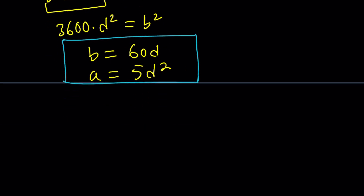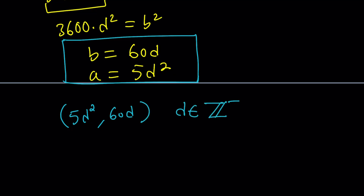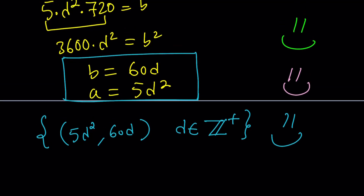So in other words, we can think about the solutions as ordered pairs such as (5d squared, 60d), where d is a positive integer. Again, if you want to add 0 to this, you can, but you're just going to get (0, 0), which is not very interesting. And this brings us to the end of the video. Thanks for watching — I hope you enjoyed it. Please let me know, don't forget to comment, like, and subscribe. I'll see you next time with another video. Until then, be safe, take care, and bye-bye.